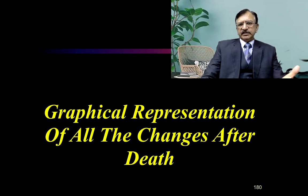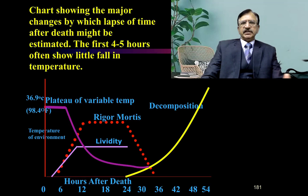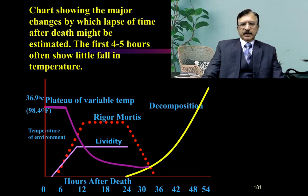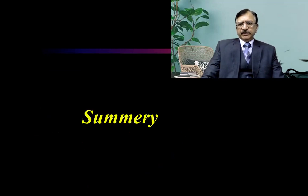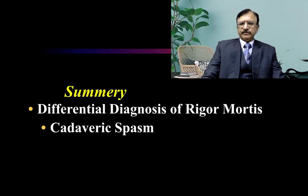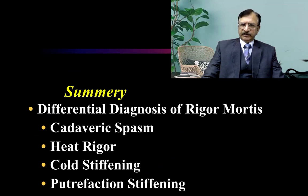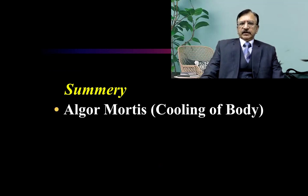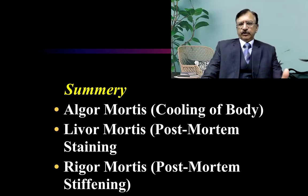Regarding the graphical representation of all changes appearing after death: all three changes are plotted together — the cooling of the body, postmortem staining, and rigor mortis. The yellow line shows decomposition, which starts after 24 hours and then progresses. The cooling is delayed for the initial period and then progresses — shown by the purple line. The summary of this lecture is that we have learned the differential diagnosis of rigor mortis: cadaveric spasm, heat rigor, cold stiffening, and putrefactive stiffening. We also discussed the graphic representation of the early changes after death — algor mortis, livor mortis, and rigor mortis — all three changes plotted together in one graph.